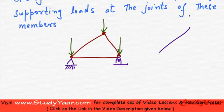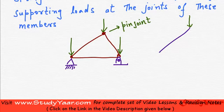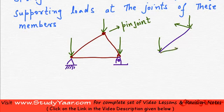There is a force acting on it like this, due to this particular joint — let us call this a pin joint. Due to this particular joint we are going to have a reaction like this. There is also a force acting like this over here; due to this joint there is going to be a reaction somewhere like this. And due to this knife edge support, I am going to have a reaction like this.